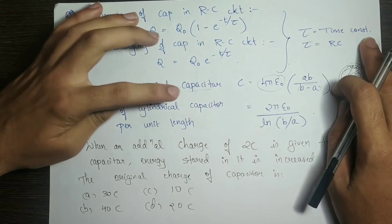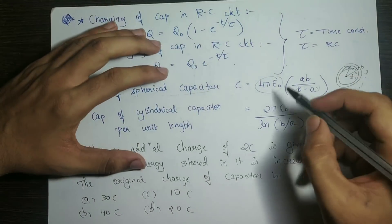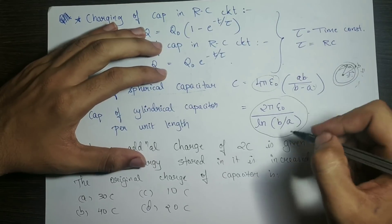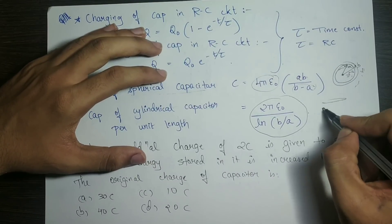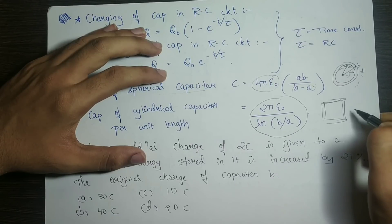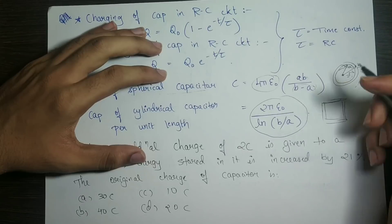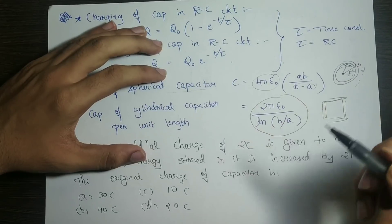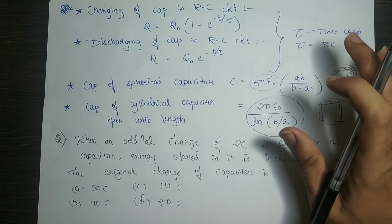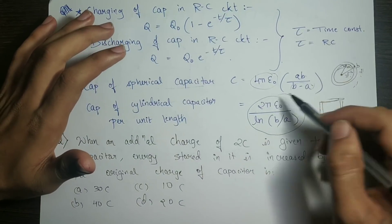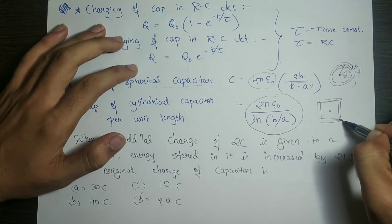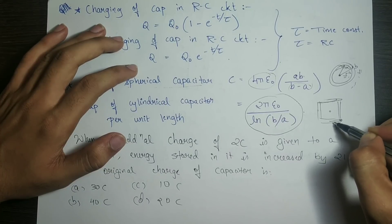Capacitance of a cylindrical capacitor per unit length is 2πε₀ divided by ln(b/a), where b is the outer radius and a is the inner radius. If a and b are small and large respectively, the formula simplifies accordingly.